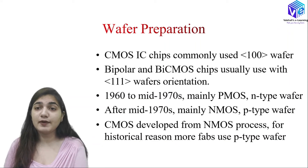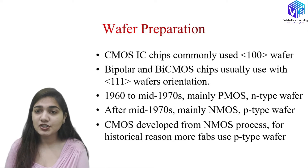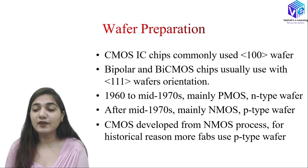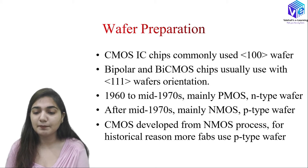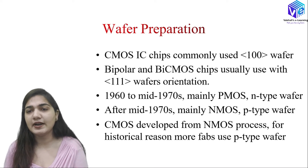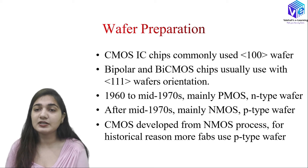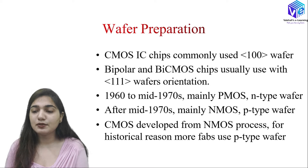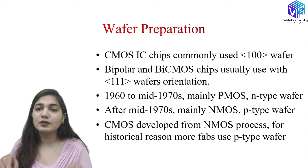Now coming to wafer preparation — this was covered in the very first unit. The CMOS IC commonly uses a (100) orientation wafer, but for bipolar and BiCMOS chips we mostly use the (111) wafer orientation. To remind you: the (111) orientation is a denser orientation than the (100) orientation.